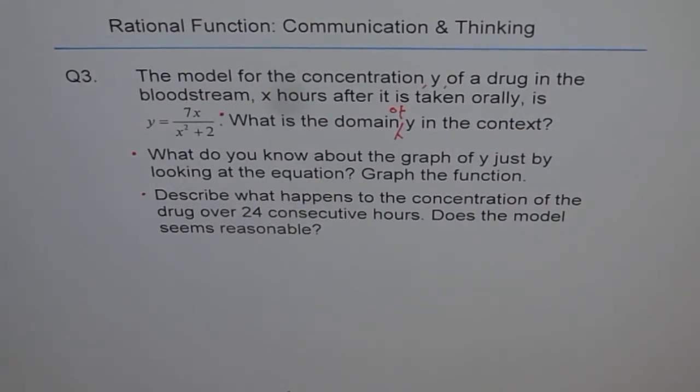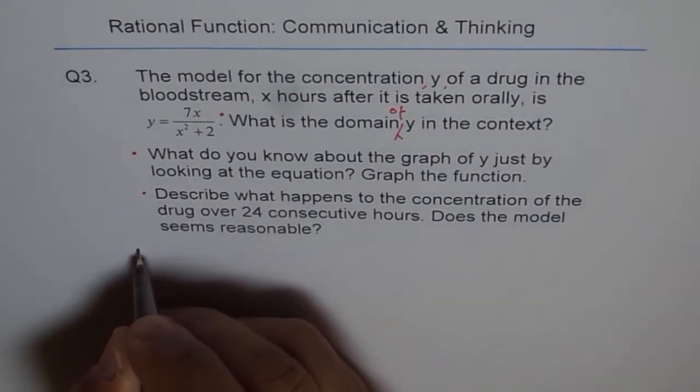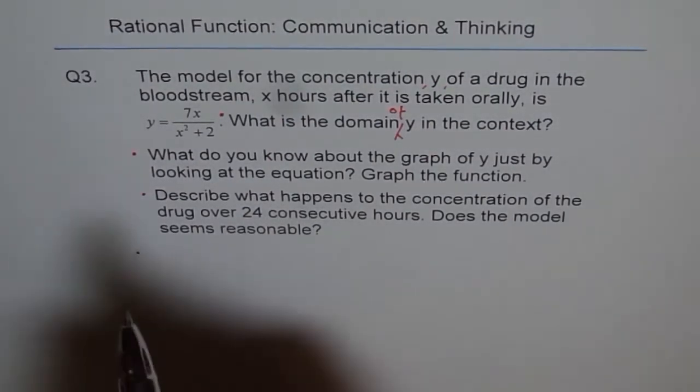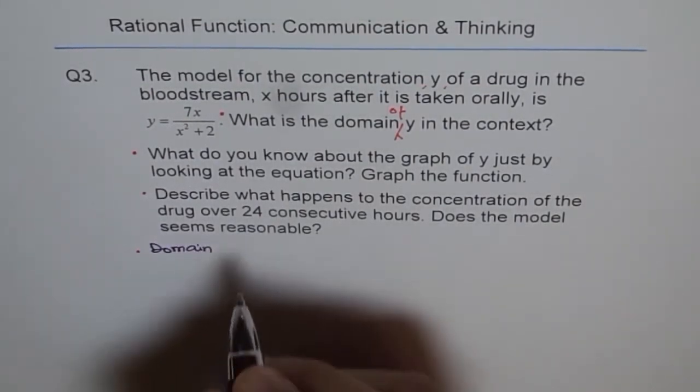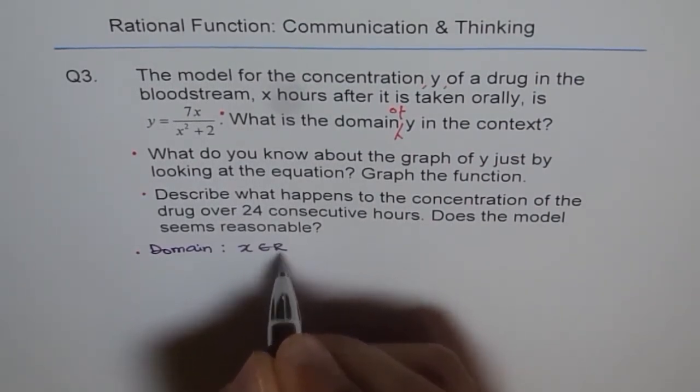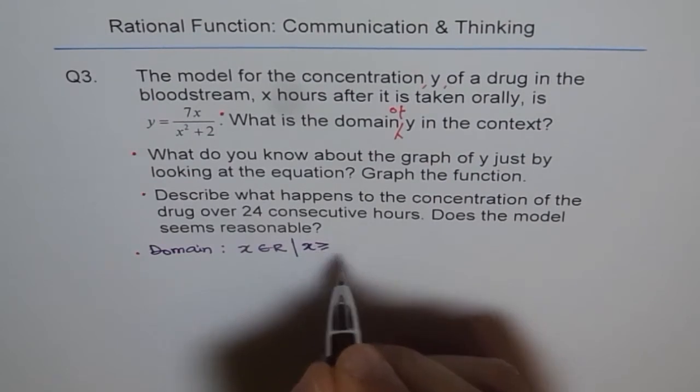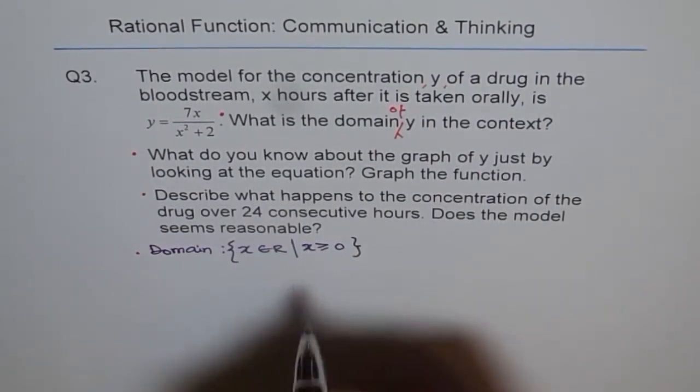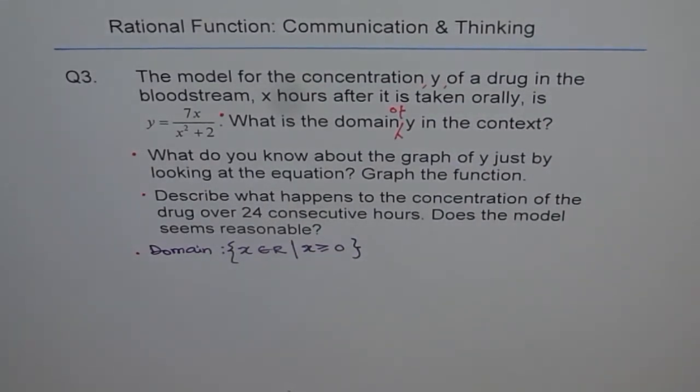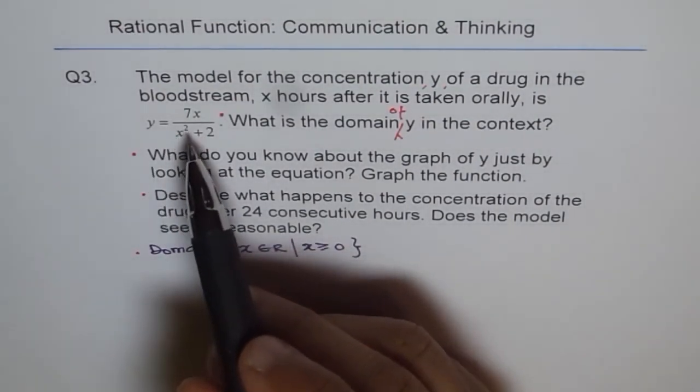Now, as far as the domain is concerned, domain is that x has to be after the drug has been taken. So it's greater than or equal to 0. So the domain is that x belongs to real numbers such that x is greater than or equal to 0. So it is after the drug has been taken and the instance when it is taken at that point, x is 0. So immediately as it is taken, it starts with 0.